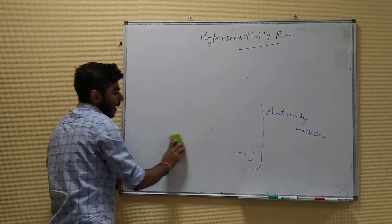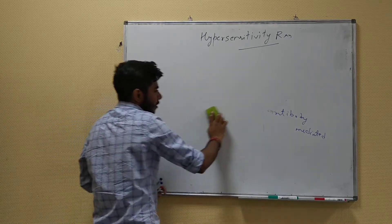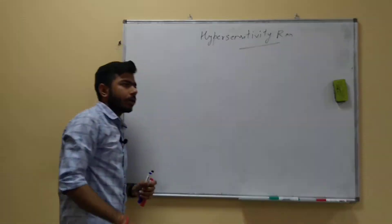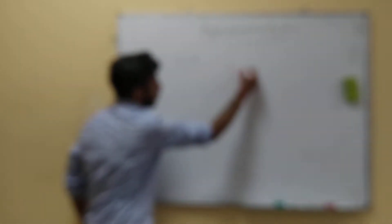Let's talk about the mechanism and pathophysiology behind type 1 hypersensitivity — how a person may develop it, the signs and symptoms, how to identify such patients, and which immunoglobulin is responsible. The immunoglobulin involved in type 1 hypersensitivity is immunoglobulin E (IgE).